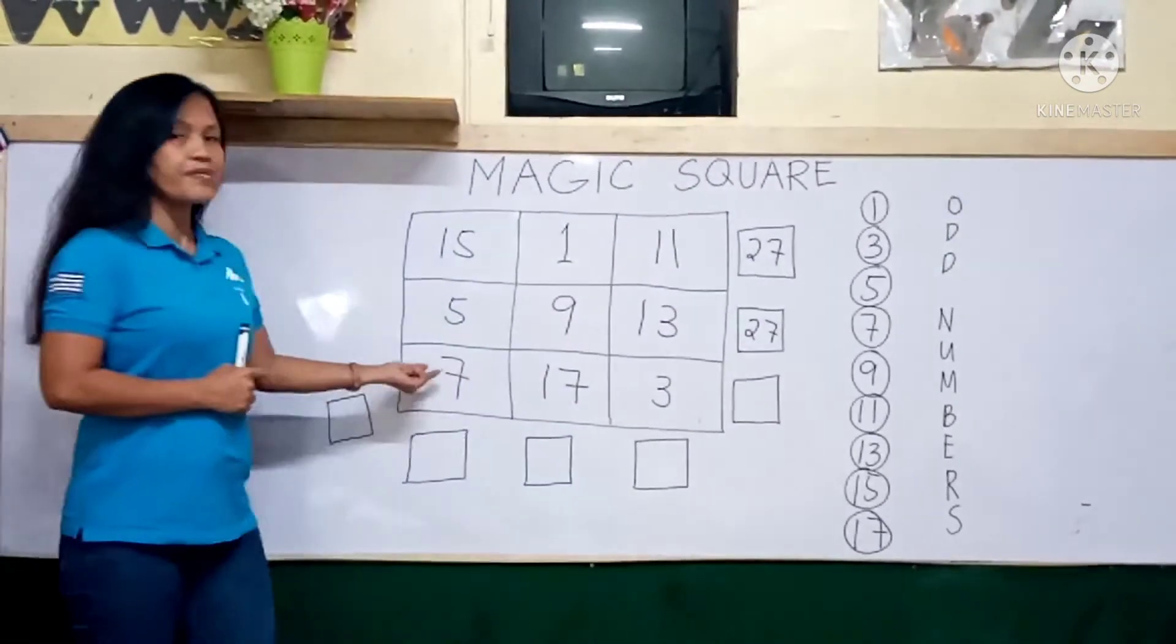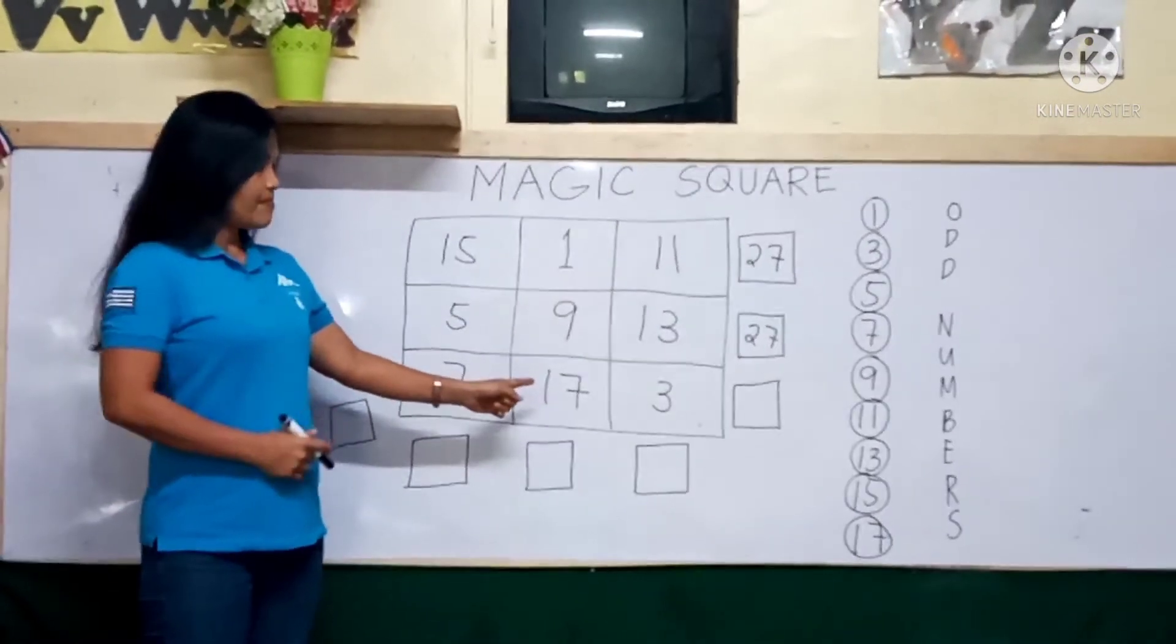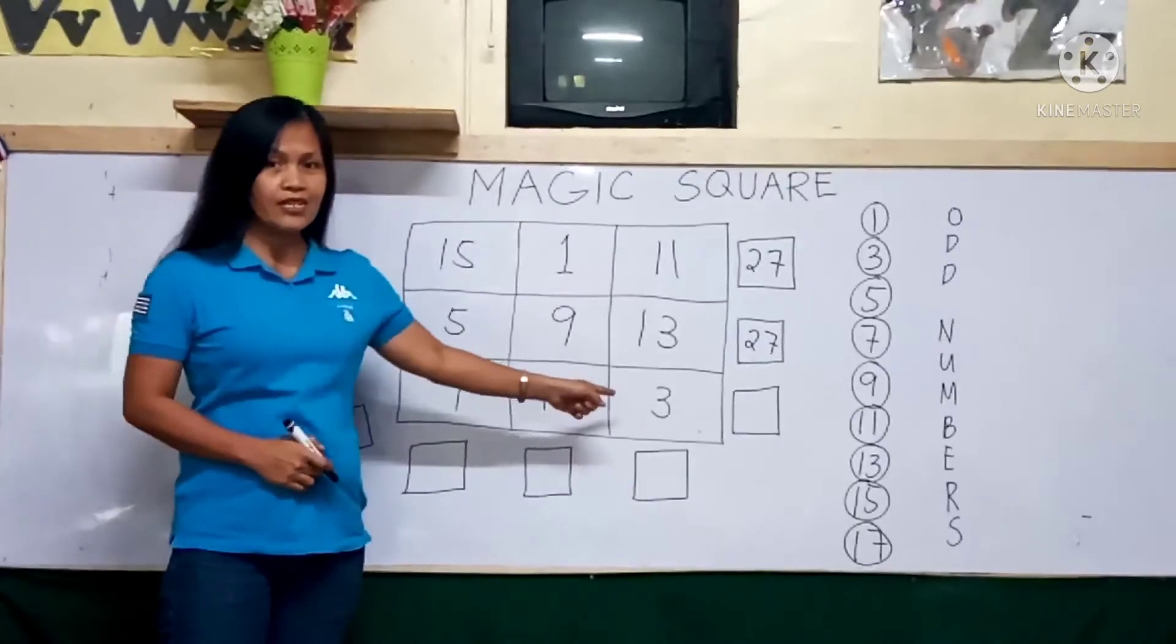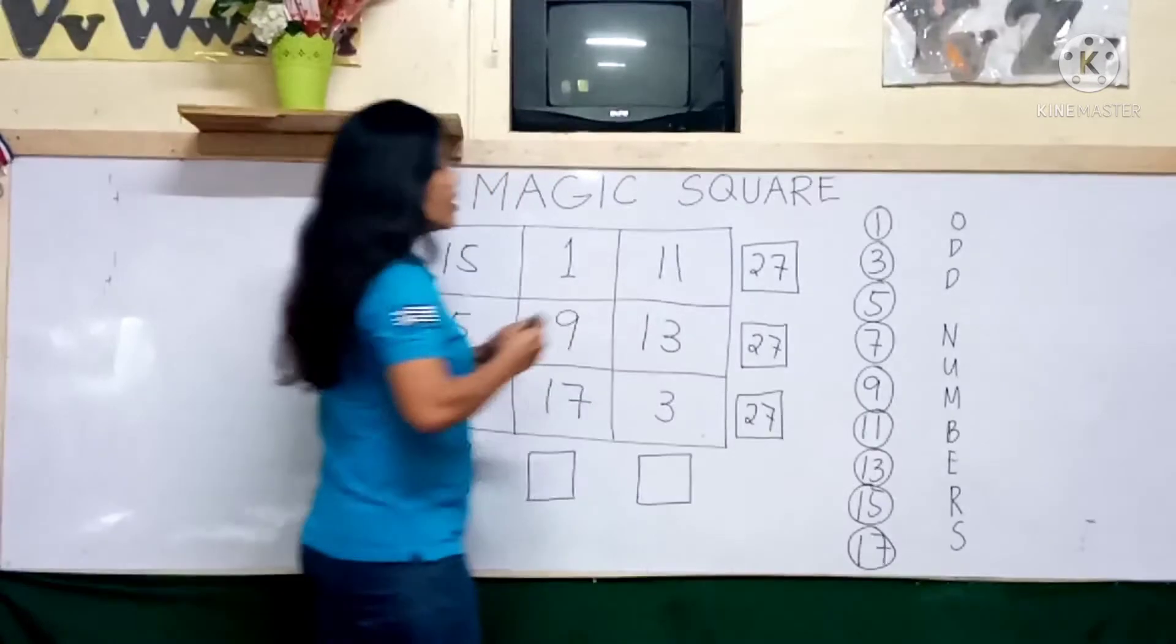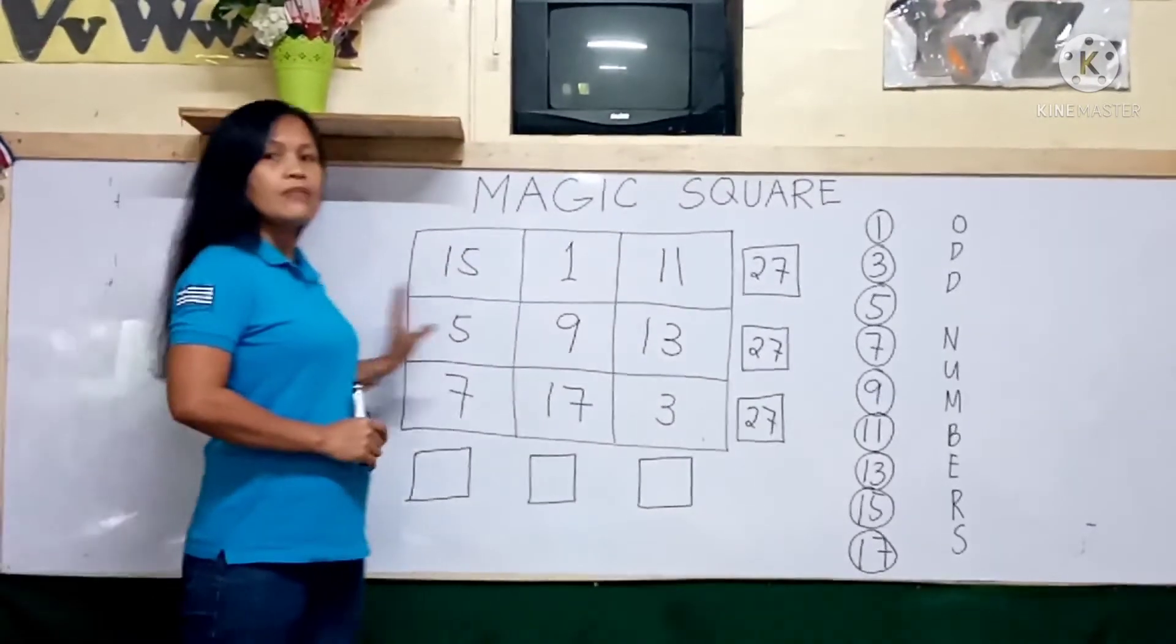7 plus 17, 24, plus 3, 27. So far, we have the same sum horizontally.